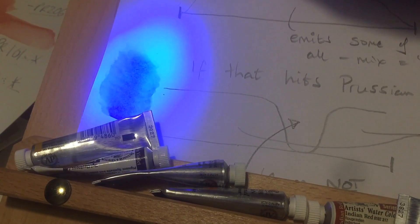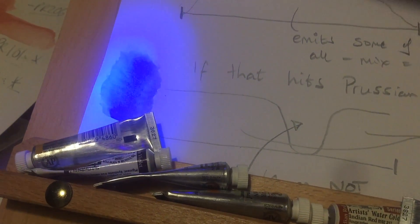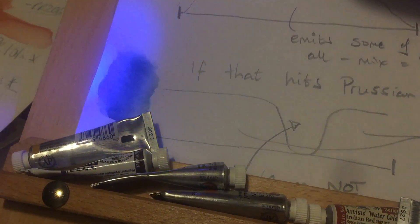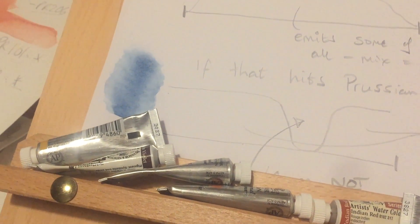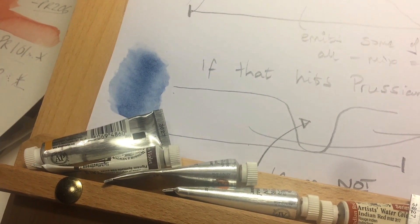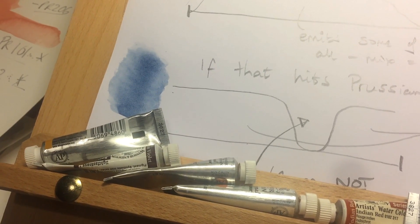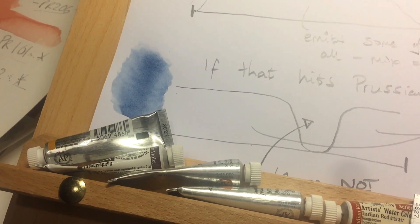I move it further away so less of it gets there. You can see it's not interacting with UV at all, whereas certain dyes and pigments do. If I was shining red on it, you'd also see nothing happens. But if I was shining blue or green on it, you'd see the color of the dye really easily.